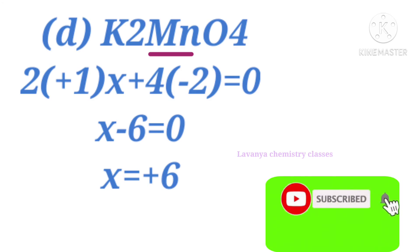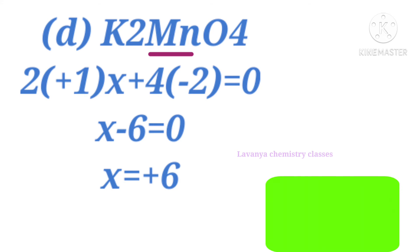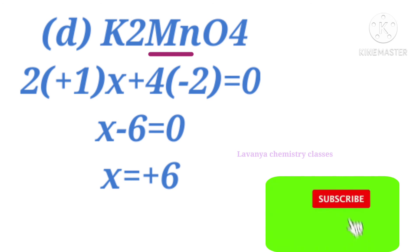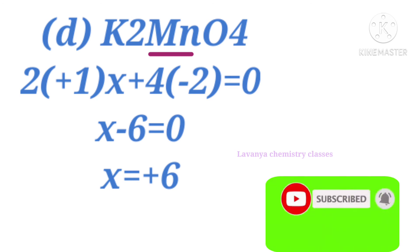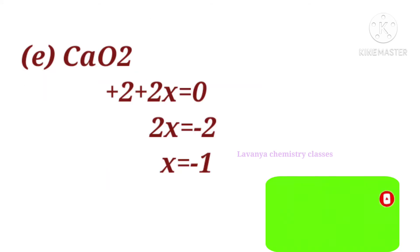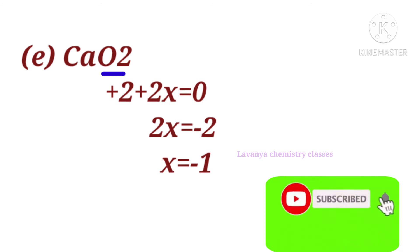The next problem is K₂MnO₄. We have to find the oxidation state of manganese. Let manganese be x. So: 2×(+1) + x + 4×(−2) = 0, giving x − 6 = 0. The oxidation number of manganese is +6.